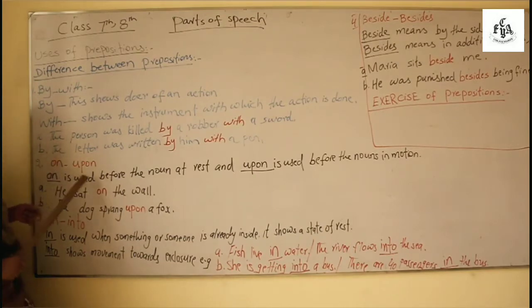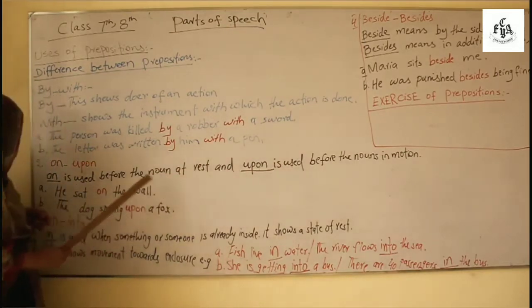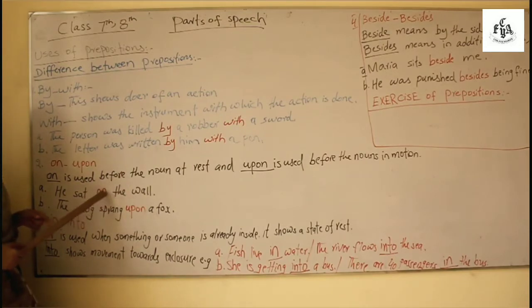Number two is on and upon both have same meaning. See on and upon. On is used before the noun at rest and upon is used before the nouns in action. For example he sat on the wall. Now the wall is not moving, it's rest, so he sat on the wall not upon.